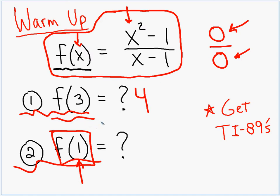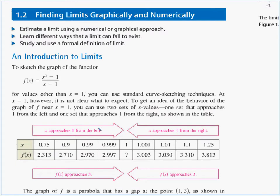Since we cannot plug in 1 exactly, we want to plug in numbers very, very close to 1 and see how the function is behaving. In this video, we'll do it with tables of values on a TI-89 and by looking at the graph. The next section, 1-3, will do some of these same problems with an algebraic solution.